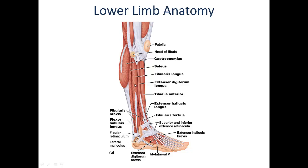The lateral compartment of the leg consists of the fibularis longus and the fibularis brevis, also known as the peroneus longus and brevis. Both these muscles pass posterior to the lateral malleolus of the ankle, allowing them to contribute to plantar flexion of the foot. Since their insertion is on the lateral aspect of the foot — specifically the metatarsals — they are also used in eversion of the foot as well.